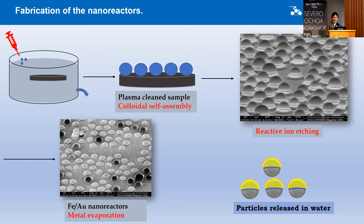We transfer the silica particles to ethanol and infuse them onto the water surface above a substrate. Once we have a densely packed silica particle layer on the water surface, we remove the water and clean the substrate with oxygen plasma. After cleaning, we use reactive ion etching to individualize the particles, and then perform metal evaporation of iron and gold layers. These nanoreactors can then be used either released in water or immobilized on the wafer.